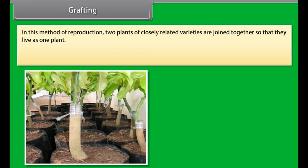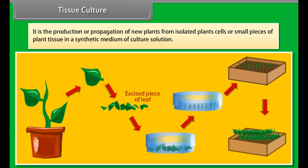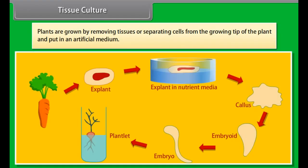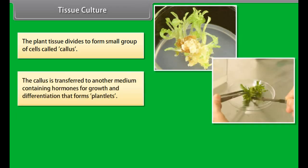Gardeners and horticulturists have developed various methods of artificial vegetative propagation. Some common methods are: cutting, layering, grafting, budding, and tissue culture. A cutting is a separated portion of root, stem, or leaf which is buried partly in moist soil. Many plants like sugarcane, rose, citrus, duranta, grapes, coco, bougainvillea, carnations, and chrysanthemum are propagated by means of cutting.